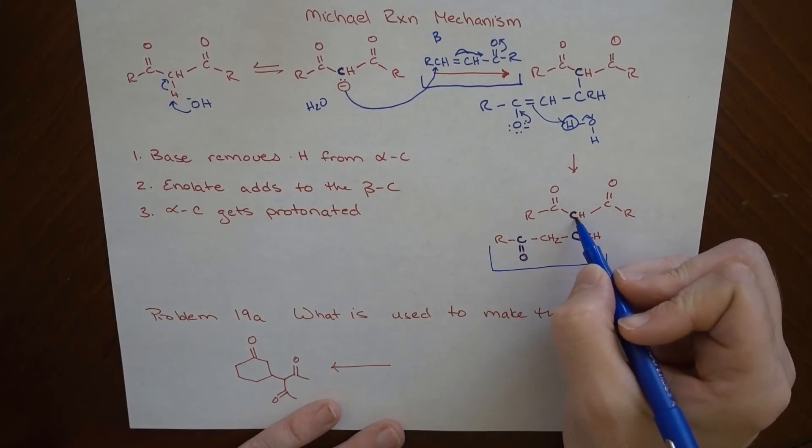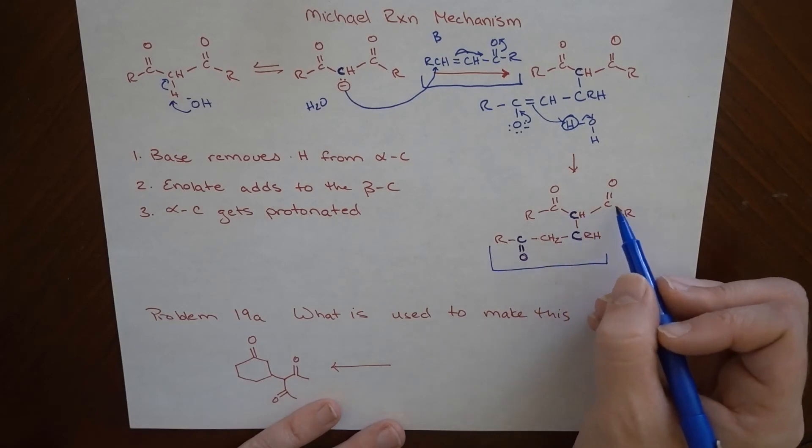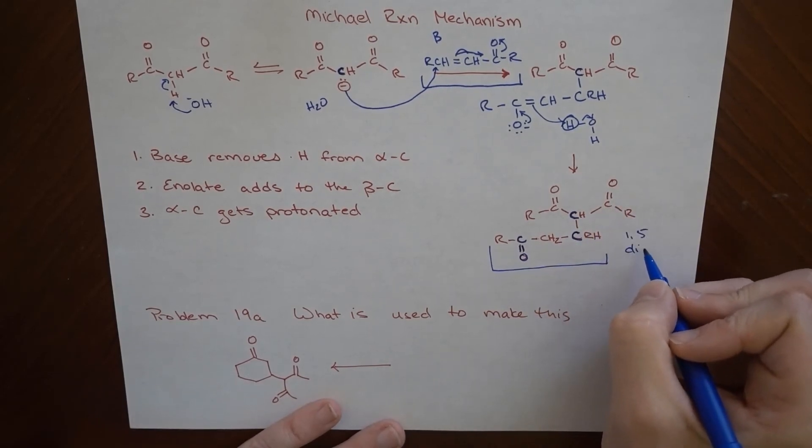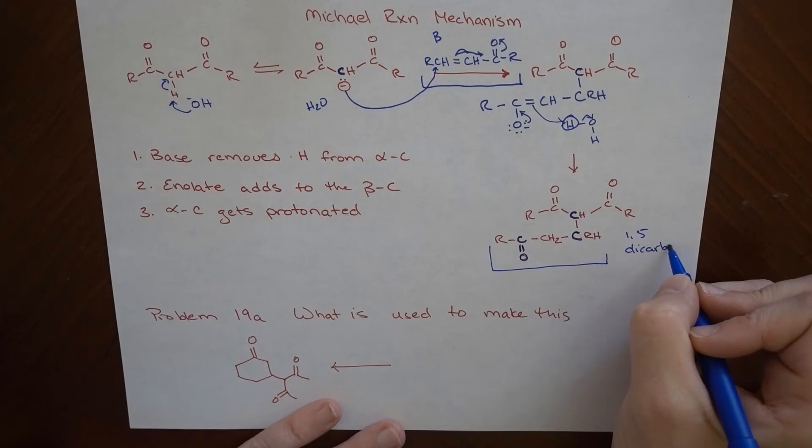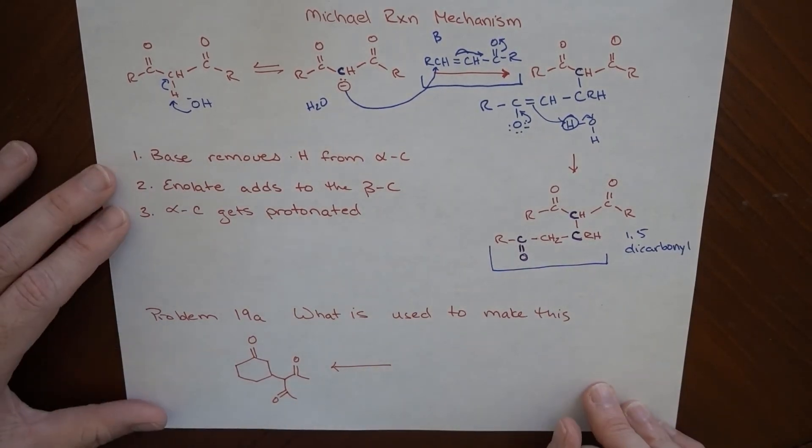Using the alpha carbon on this dicarbonyl. So we formed a 1, 2, 3, 4, 5, again, a 1,5-dicarbonyl. That is not the name of this, it's the kind of compound that it is. So that's the sort of thing that should come out of a Michael mechanism.